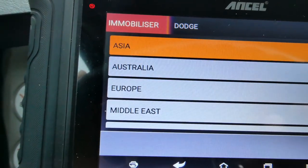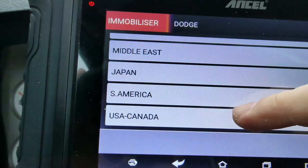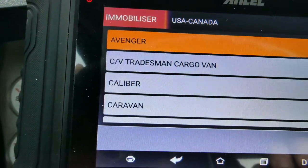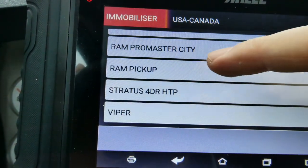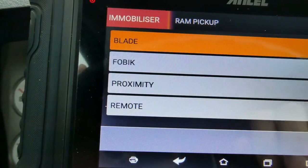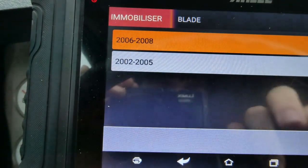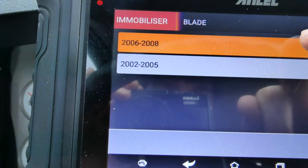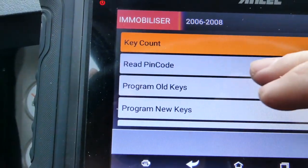All right, now we're going to press Dodge. We're in USA, so we're going to hit that. We're going to scroll down to RAM pickup. We have a blade key that we had to cut. This is a 2008.